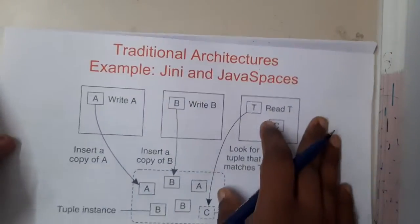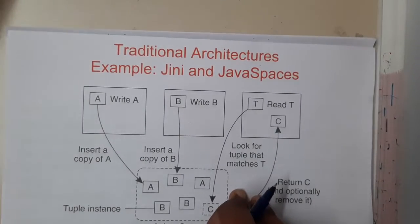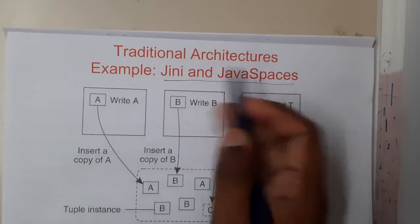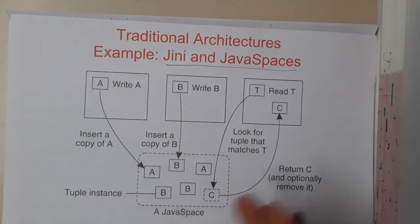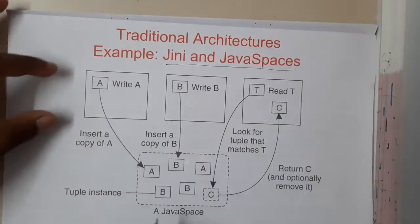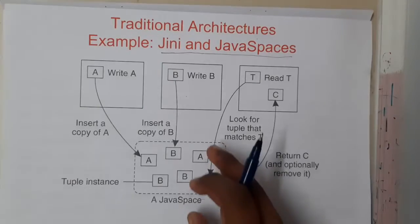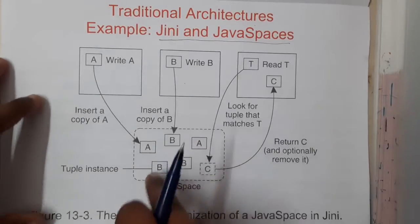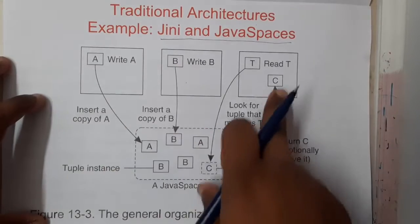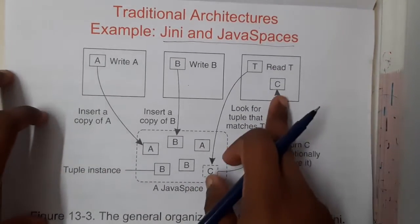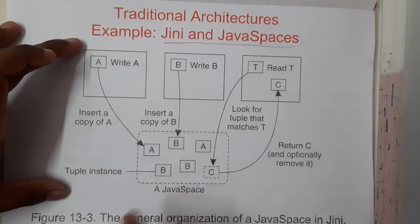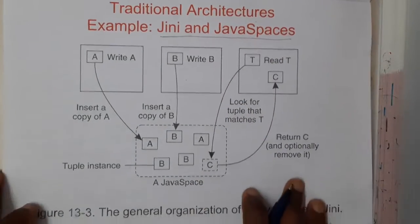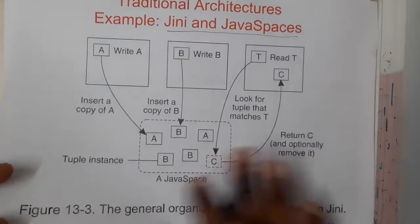One of the traditional architectures for coordination-based systems is Tini and JavaSpaces. Assume there are three different processes that need to perform operations. The first and second processes write some values — say A and B — into the JavaSpace, and there are already some existing tuples there. Once new tuples are entered, anyone can come to read any tuple, whether existing or newly added. This is similar to the publisher-subscriber system, except here we can have multiple publishers.